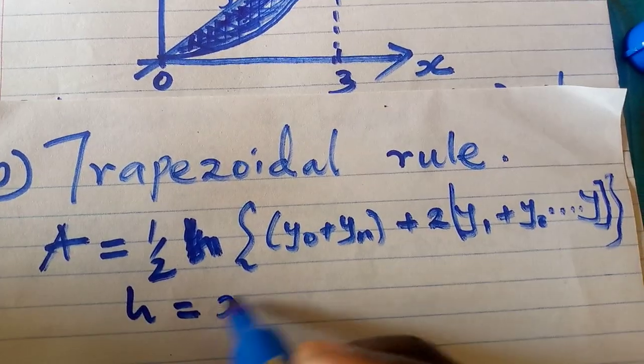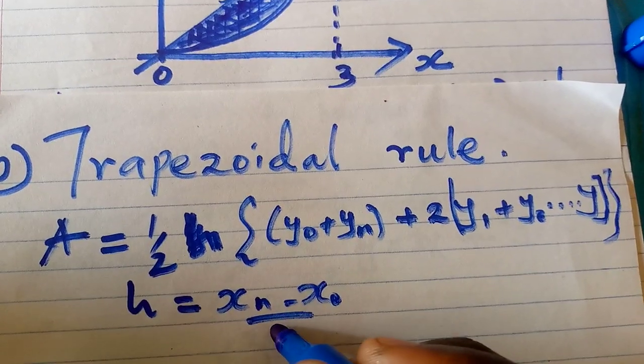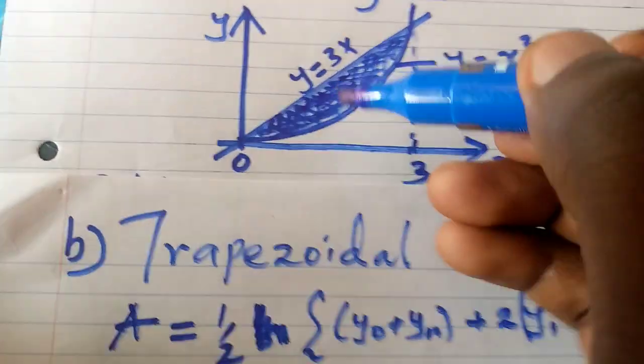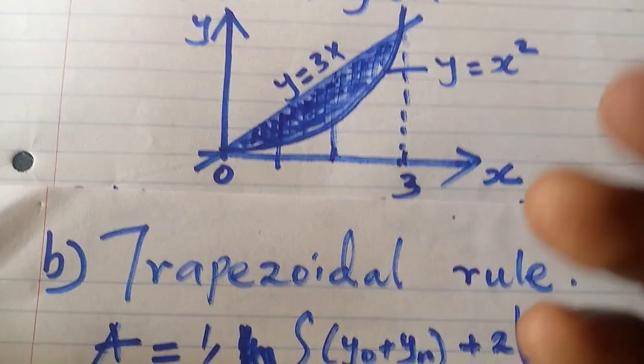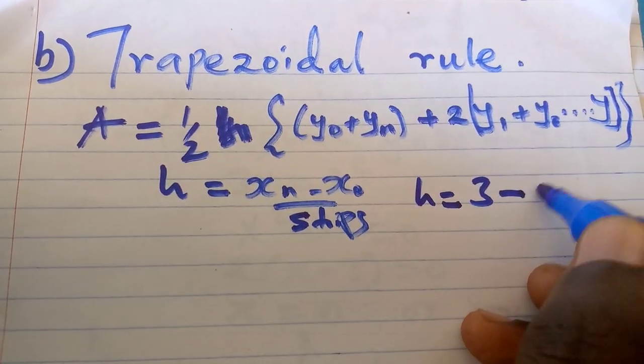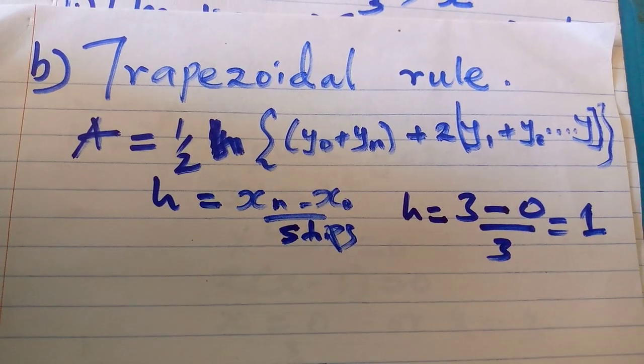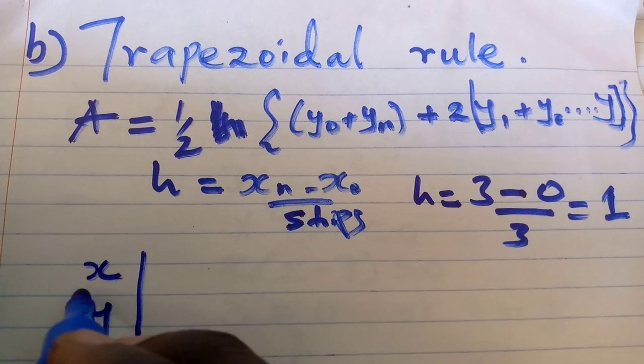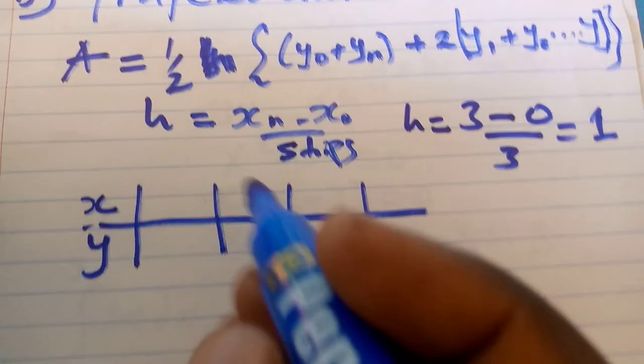But h is equals to the range divided by the number of strips. So I want to divide this into three strips, which means h equals 3 divided by 3, which is 1.